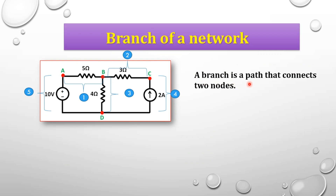A branch is a path that connects two nodes. For example, A and B are two nodes, and the element between them forms a branch. Any element — a resistor, capacitor, voltage source, or current source — connected between two nodes forms a branch. In this circuit, there are five branches total.